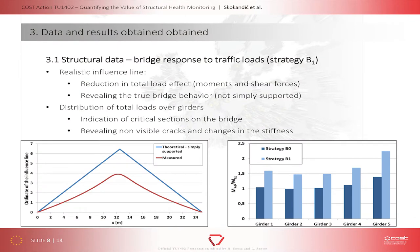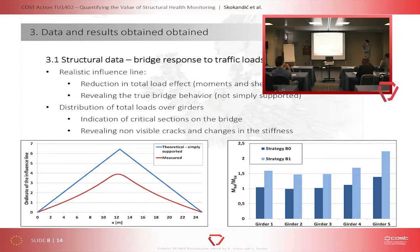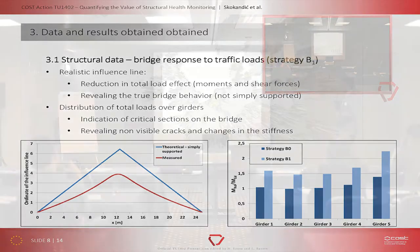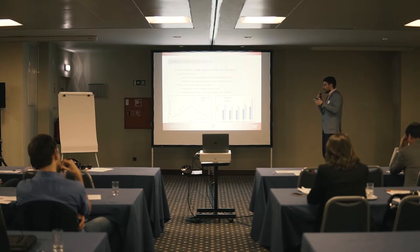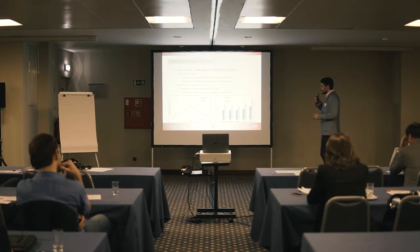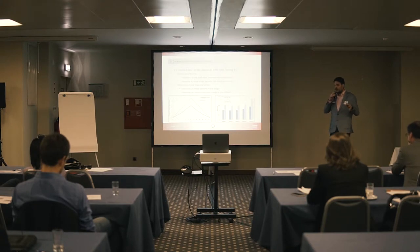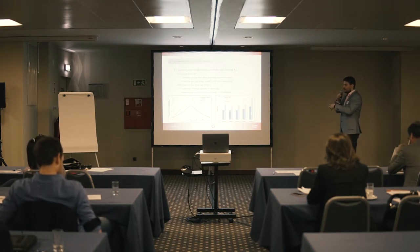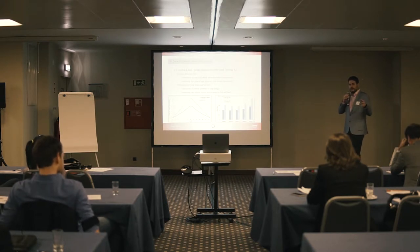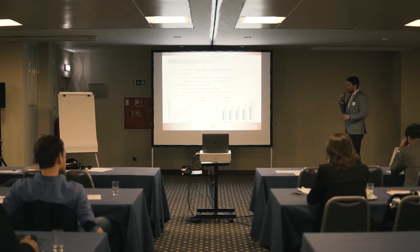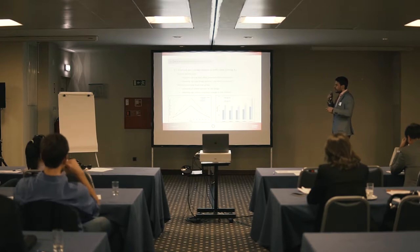For structural data, we have realistic influence lines which typically show a reduction over the theoretical influence line. This reduction represents a reduction of bending moment at midspan, which directly improves the bridge's load-to-resistance ratio. The system also gives distribution of loads over girders, so you can identify the critical section of the bridge — since not every girder is loaded equally. On these prefabricated bridges, girders have the same reinforcement and tendons, so you can identify which one is in critical condition. It also reveals non-visible cracks and changes in stiffness.